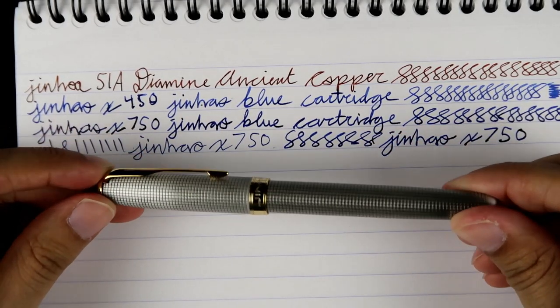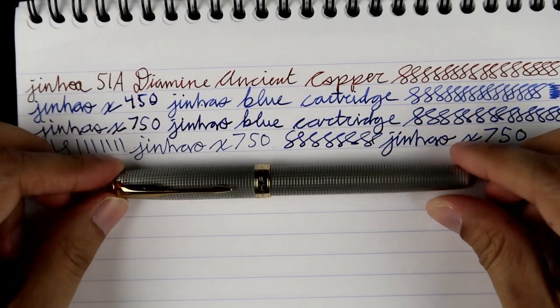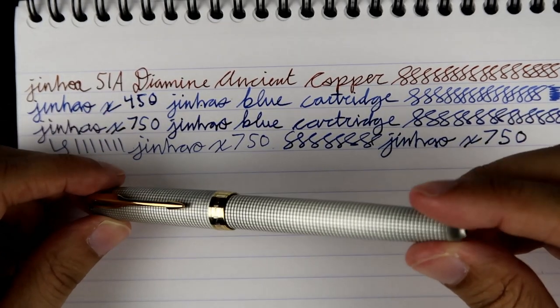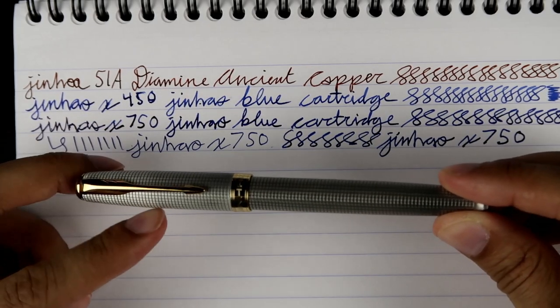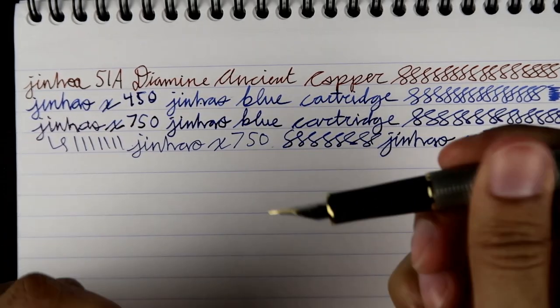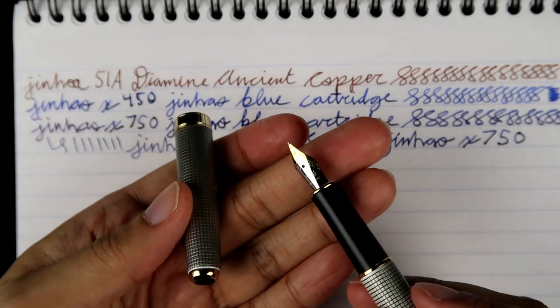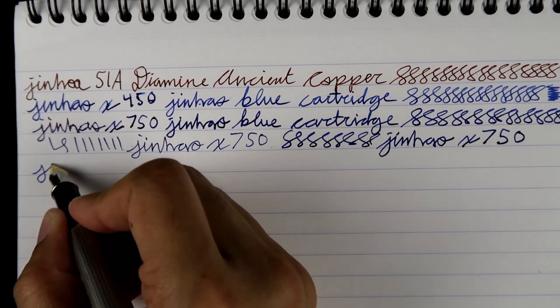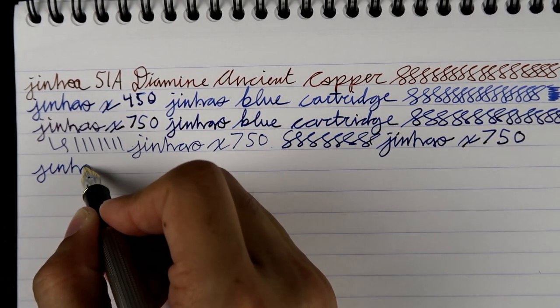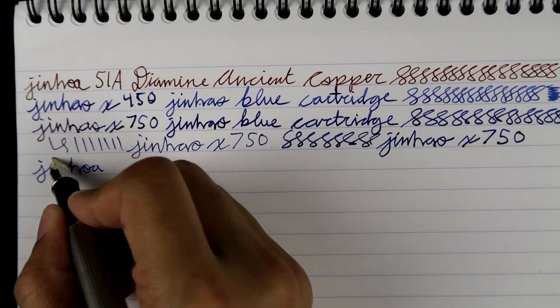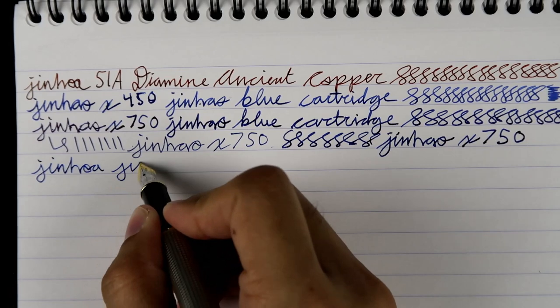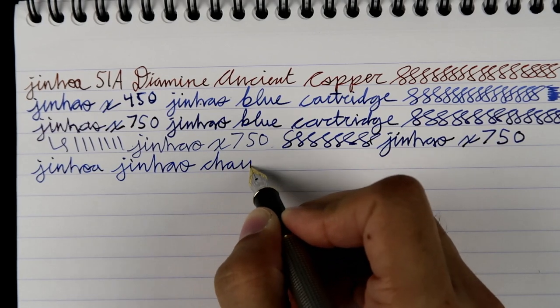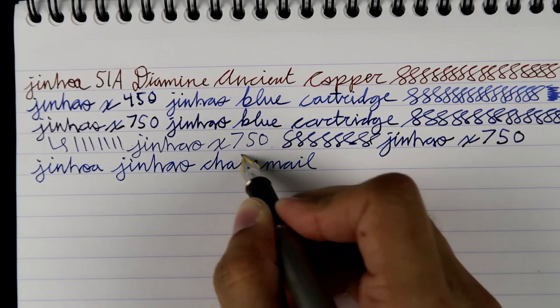Alright, now we've got the chain mail. Been waiting to show you guys this one. That's silver chain mail, silver and gold, beauty. Look at that, the arrow, arrow accent on the clip. Gold and silver nib. Keep switching the O and the A. What is it? Who knows? Freaking Jinhao, that's what it is. Jinhao chain mail.